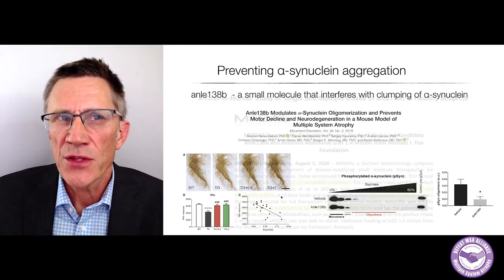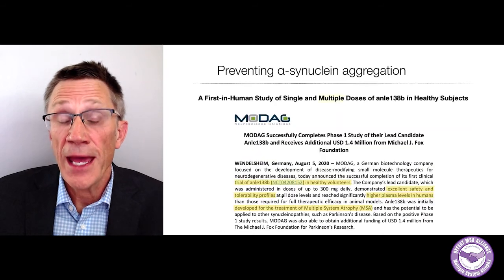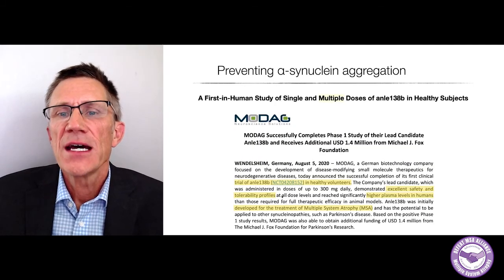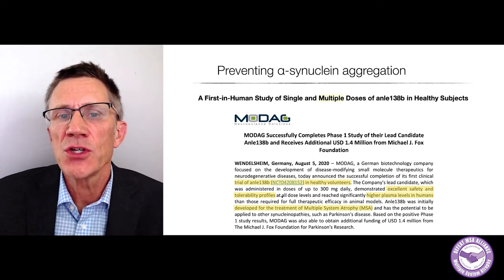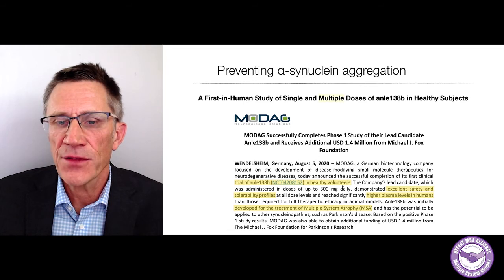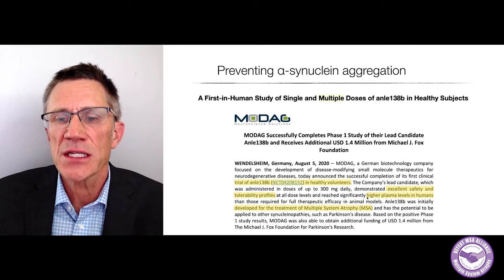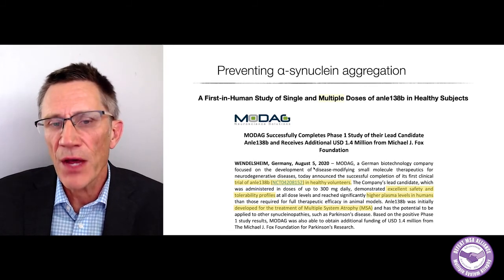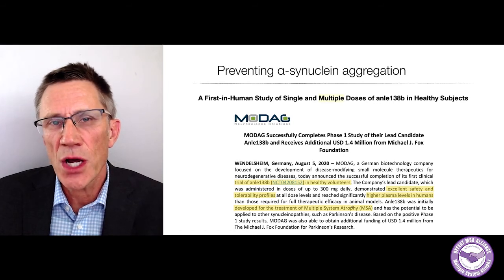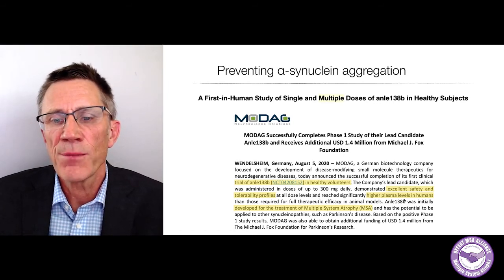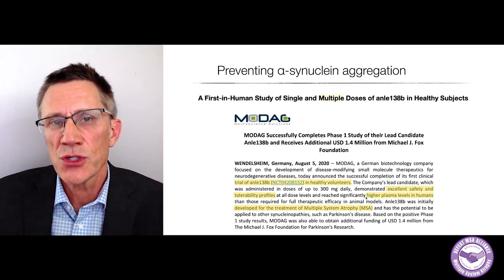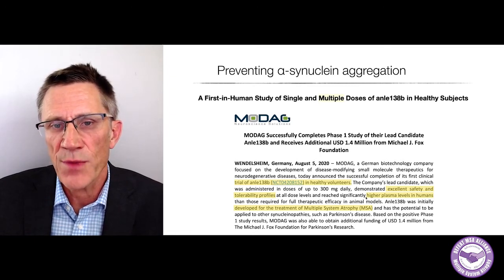There is a company that owns ANLI-138B called MODAG, and they have started first-in-human trials in healthy volunteers. They just reported a month ago that there is excellent safety and tolerability with this drug, and the levels in plasma are high. They are now interested in pursuing this in multiple system atrophy.